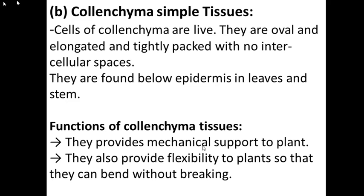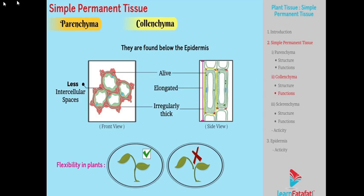Through the stem and leaves, plants can move and bend without breaking because of colenchyma simple tissues. You can see in the diagram the simple permanent tissues parenchyma and colenchyma — note the less intercellular space in colenchyma. The cells are living, elongated, and irregularly thickened. Both parenchyma and colenchyma contribute to flexibility in plants.